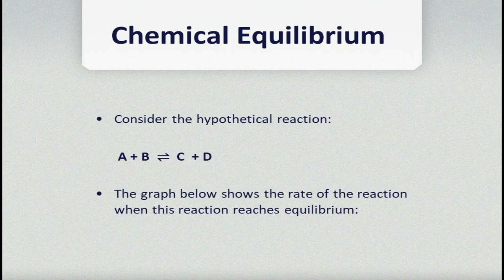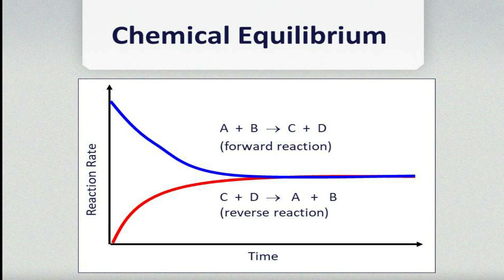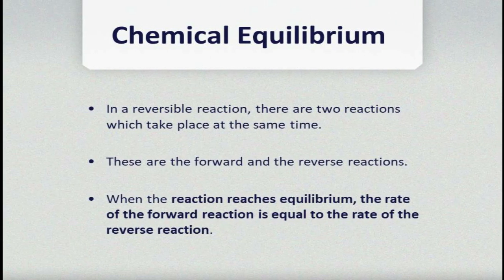Let's look at the graph below and see what is happening when this reaction reaches equilibrium. If you look at the graph we have there, we can see that there is a forward reaction and there is a reverse reaction. A plus B equals C plus D is called the forward reaction. We can see there is a double arrow — that double arrow tells you the reaction is reversible. C plus D equals A plus B is what we refer to as the reverse reaction.